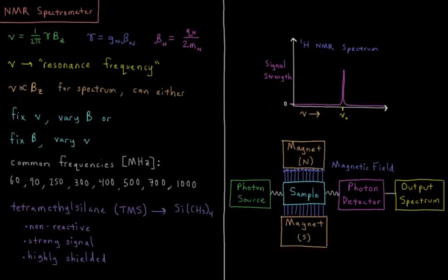This video will discuss the concept of the nuclear magnetic resonance spectrometer. In previous videos we showed that there is a value called the nuclear magneton for a given nucleus, called beta n, which is equal to the charge of that nucleus divided by 2 times its mass.